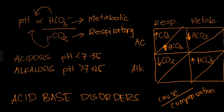Let's go to respiratory alkalosis. The cause here is carbon dioxide, so what compensates is bicarbonate. Since this is alkalosis, the pH is increased. To decrease the pH back to normal, we decrease bicarbonate. That is how respiratory alkalosis is compensated — by decreasing bicarbonate levels.